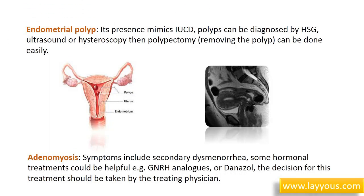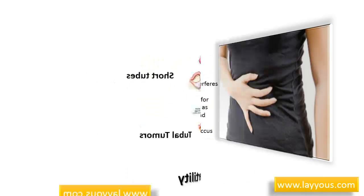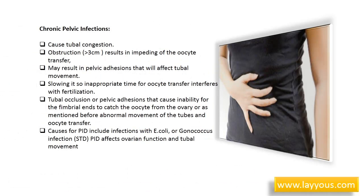Tubal factors causing infertility in women are five in number: chronic pelvic infections, destruction of the fimbriae, adhesions, short tubes, and tubal tumors. Chronic pelvic infections cause tubal congestion; if the cross-section reaches more than 3 centimeters, tubal obstruction results, impeding oocyte transfer. Chronic pelvic infections may also result in pelvic adhesions that affect tubal movement.